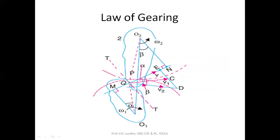Point Q is where both gears make contact. We draw a common normal passing through this point of contact, and a tangent at that point of contact. As per the law of gearing, the common normal drawn at the point of contact must always pass through the pitch point — only then is the condition for correct gearing satisfied.